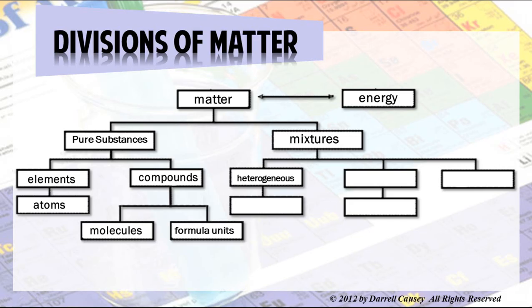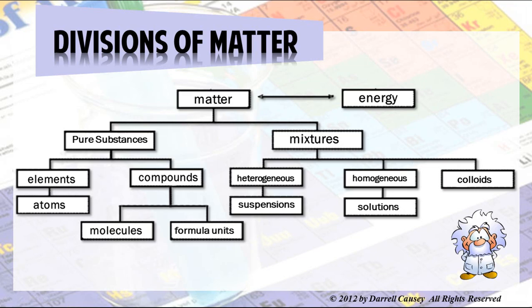Then you have mixtures: heterogeneous mixtures, homogeneous mixtures, and colloids. Colloids are kind of both heterogeneous and homogeneous, but I think they need their own group. Mixtures are either heterogeneous, homogeneous, or colloids. Heterogeneous are usually a type of suspension that separates into phases. Homogeneous are solutions. And colloids are suspensions that haven't completely separated.